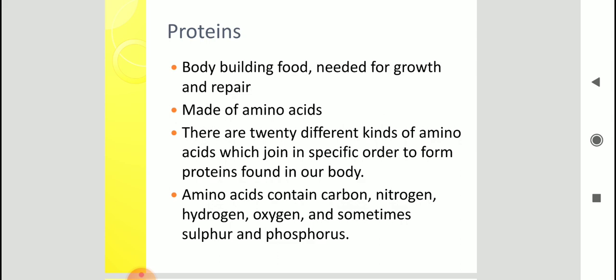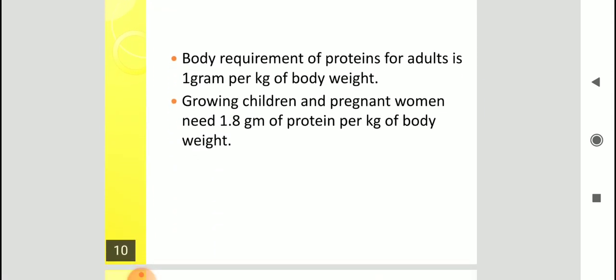Alright, children. Now, talking about how much protein should be there in our diet. A normal adult should consume 1 gram per kg of body weight of protein. So if a person is of 45 kg, then every day that person should consume 45 grams of protein. But, growing children and pregnant women, they need more. 1.8 gram of protein per kg of body weight. So a little more protein is required by growing children and pregnant women.